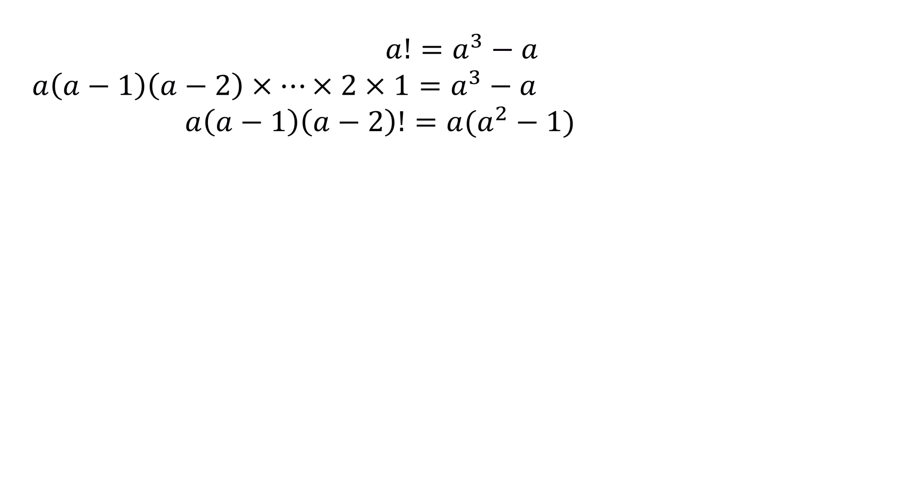We can simplify that as a times (a minus 1) times (a minus 2) factorial. You can stop at any point and put a factorial sign there, and it means the same thing. On the right-hand side, we'll factor out a.